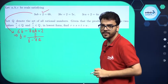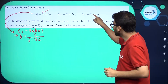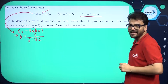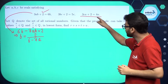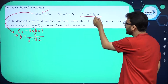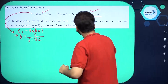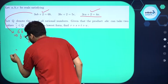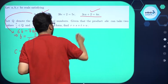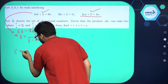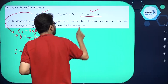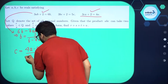Now, taking the third equation, can I write C in terms of A from here? Writing C in terms of A from this equation, we get C equals (4A minus 2) divided by 3A.